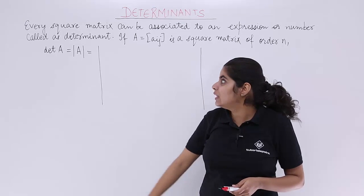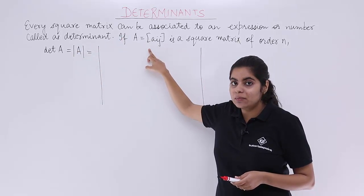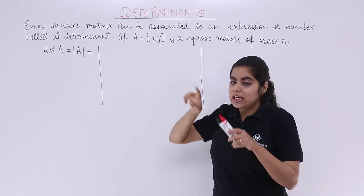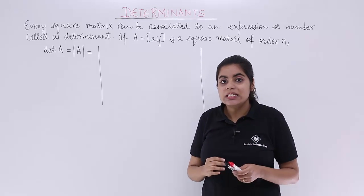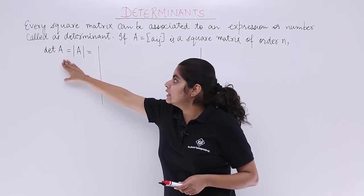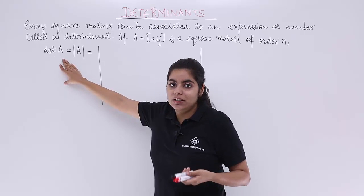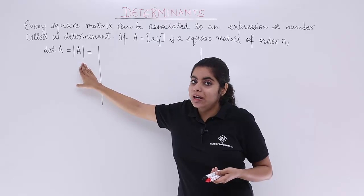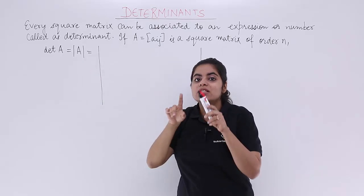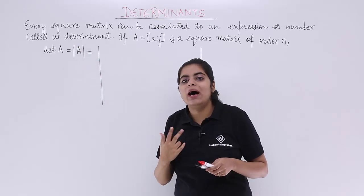Remember in matrices we had the symbol of matrices as a square bracket—three by three matrix in a square bracket, three rows three columns. Similarly, determinant is written as det A and it is read also as det A, determinant A, and it is also written with two parallel lines.